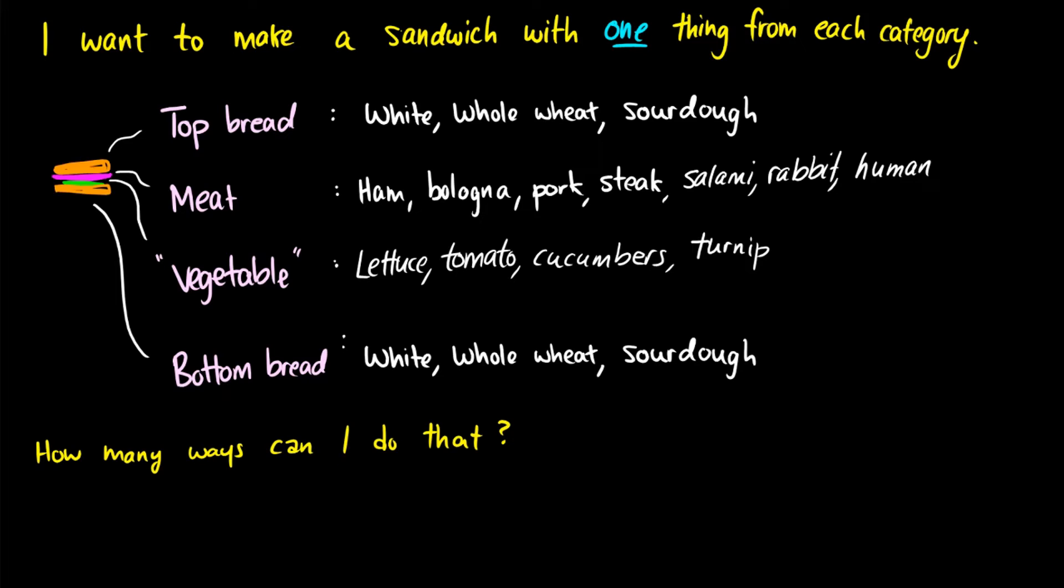Well, it's really like having four different tasks that are all done one after another. For instance, first we choose a top bread, then we choose a meat, then we choose a vegetable, then we choose a bottom bread. So it's A, B, C, or D. So four tasks. Well, for the top bread, we have three different choices. Okay? For the meat, we have one, two, three, four, five, six, seven choices. So ham, bologna, pork, steak, salami, rabbit, and human. For vegetables, we have four choices. And for the bottom bread, once again, we have three choices.